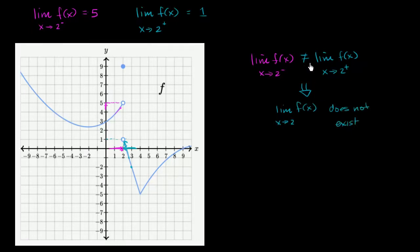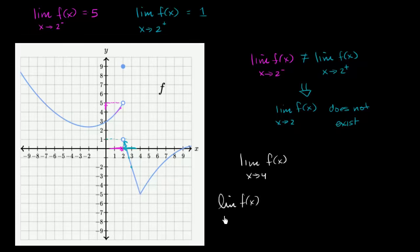In order for the limit to have existed, those two values would have had to be equal to each other. For example, what is the limit of f of x as x approaches 4? We consider both one-sided limits — from below and from above. The limit of f of x as x approaches 4 from below: when x equals 3, f of 3 is negative 2; f of 3.5 seems to be right over here; f of 3.9 seems to be right over here; f of 3.999 — we're getting closer and closer to our function equaling negative 5. So the limit as we approach 4 from the left is equal to negative 5.